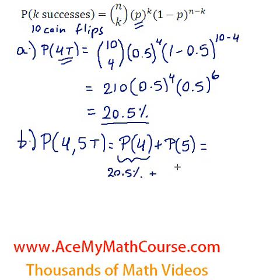Let's calculate the probability of getting 5 tails. So that's going to be 10 choose 5 times 0.5 to the number of successes, which is 5 times 0.5 to the number of failures, which in this case would be getting heads.